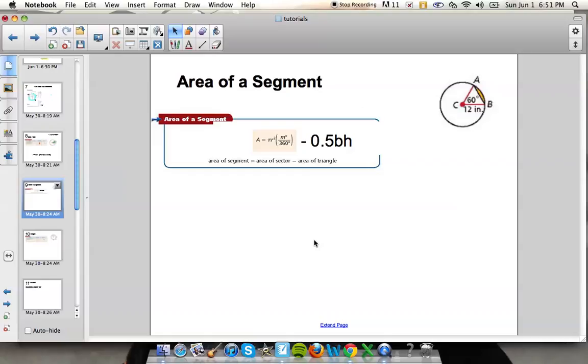The next one, area of a segment. Area of a segment is just that little highlighted portion of that circle. It's the area of the sector subtracted from the area of your triangle, and then that is going to be the area of the segment.